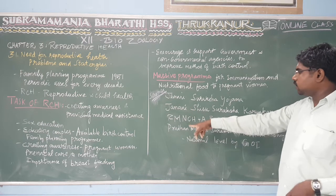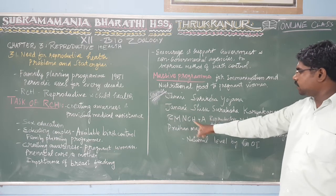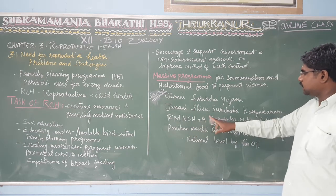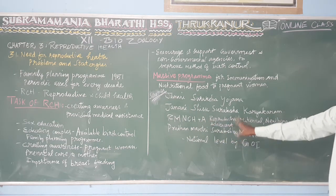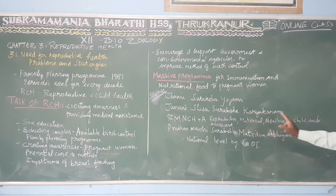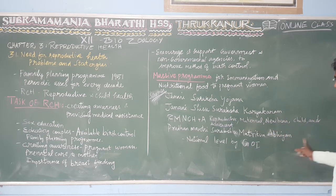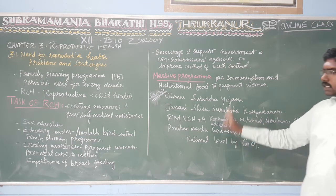So we have to say that RMNCH plus A stands for Reproductive, Maternal, Newborn, Child, and Adolescent.